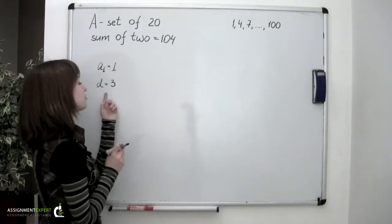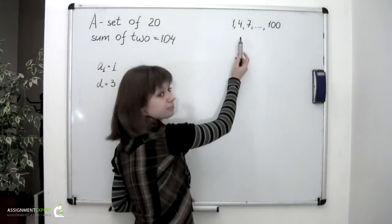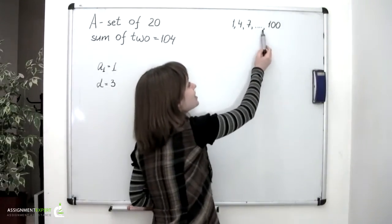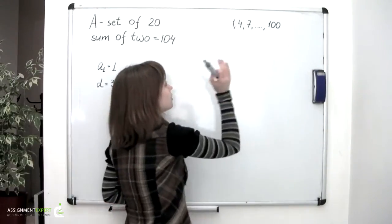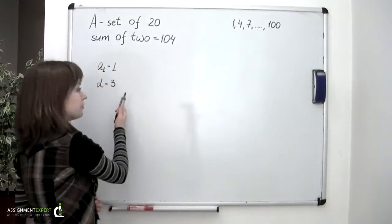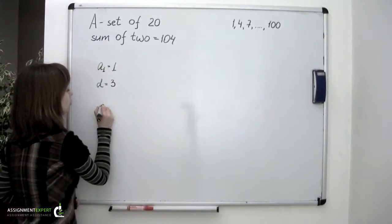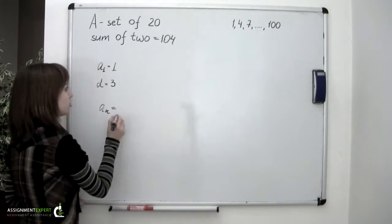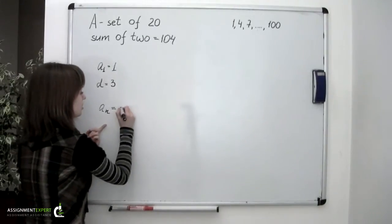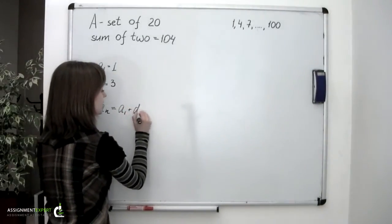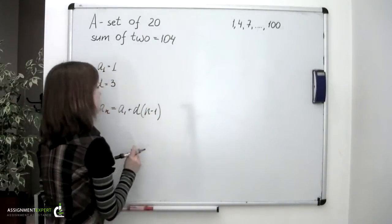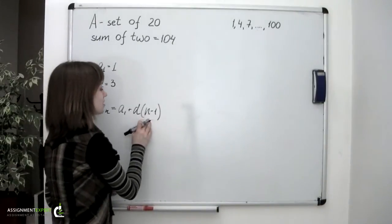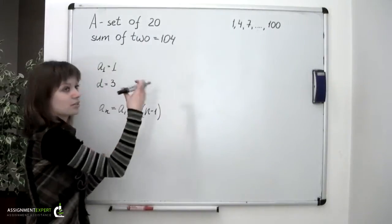We can calculate this difference by subtracting 1 from 4, 4 from 7, 7 from 10, 10 from 13, and so on, up to 97 from 100. We would still obtain the same number and it would be 3. We also know that any term of the arithmetic progression can be described by the following expression: A sub n equals A sub 1 plus D times n minus 1, where A sub 1 is the first term of the progression, D is the difference of the progression, and n is the total amount of terms in this progression.